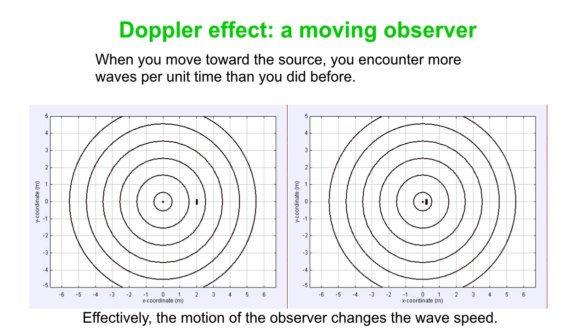If you simply count the waves, you will see that you've encountered about one, two, three, four, four and a half waves when you're at rest, and so is the source. And on the right, if you count, then you'll see that you've encountered about six and a half waves.